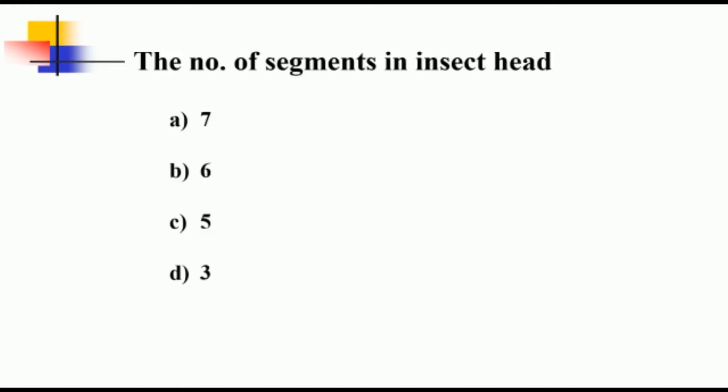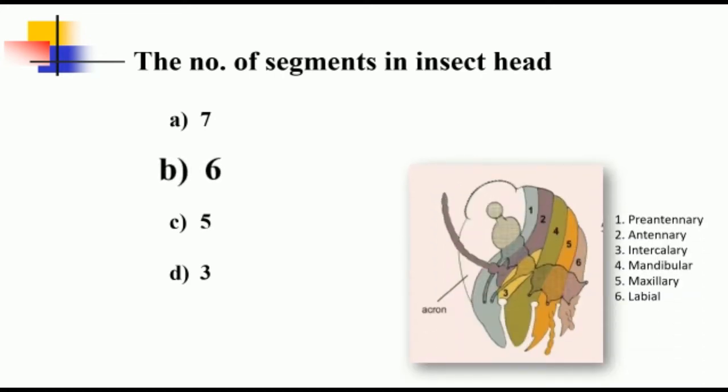The number of segments in insect head is six, which include pre-antennal, antennal, intercalary, mandibular, maxillary, and labial.